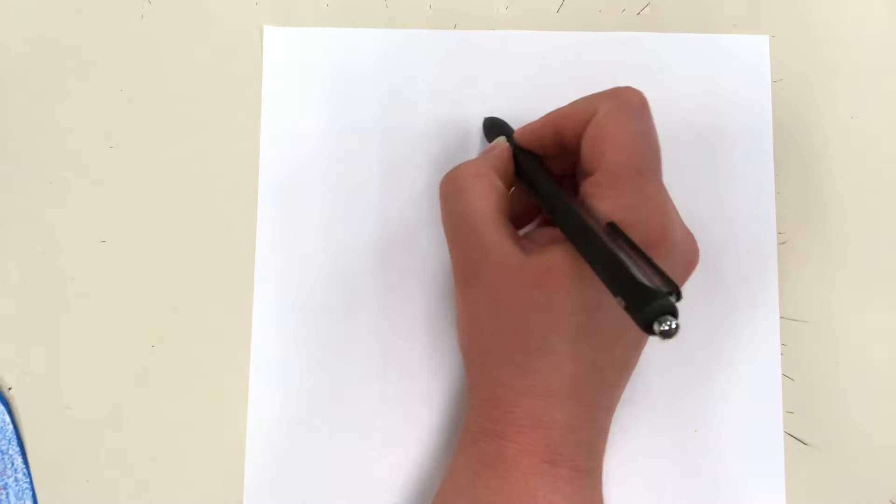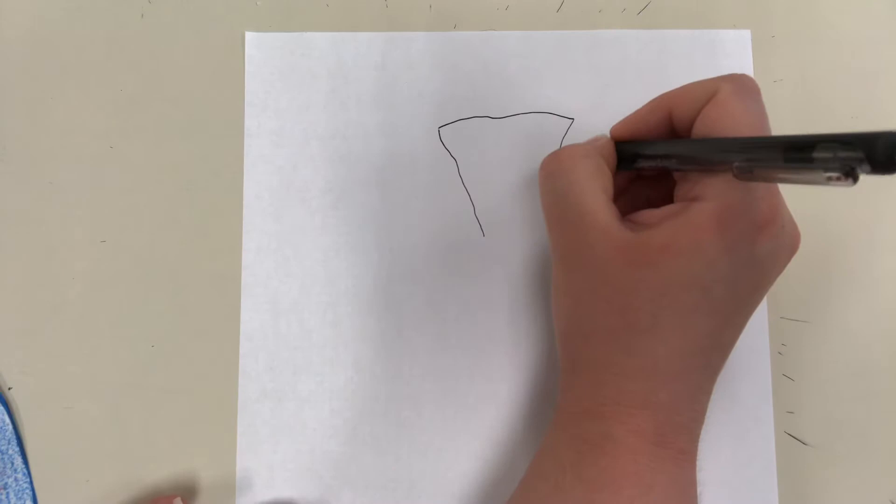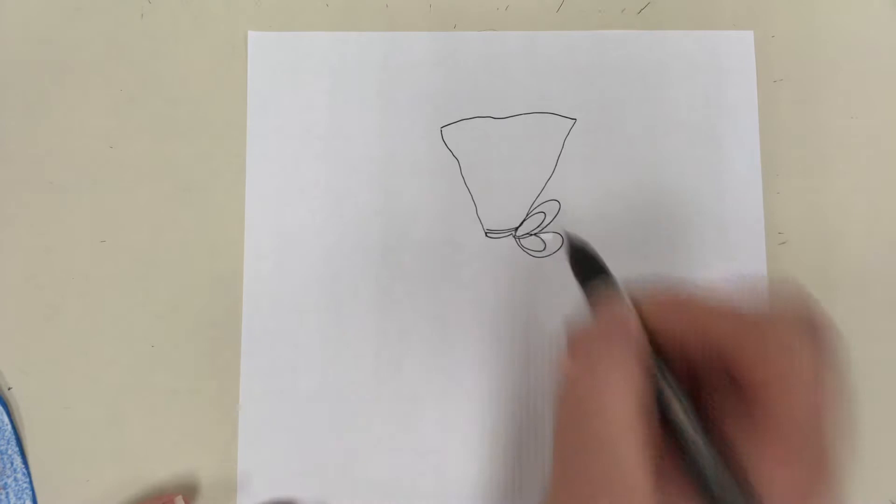We're going to start by drawing the shape of the bag. We're going to start by drawing a line across. It doesn't have to be a perfectly straight line because it's supposed to look like a bag. Kind of an angled line down, an angled line down, almost like we're going to draw an upside down triangle, but we don't close it. I'm going to draw some stripes across like the ties on the bag and a couple of ovals and loops look like ties on a bag.